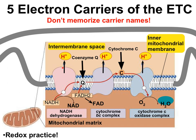Here's chain member number one, number two, number three, number four, and number five, and the final electron acceptor is oxygen.